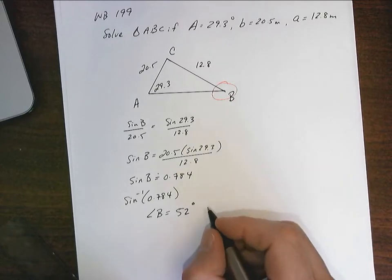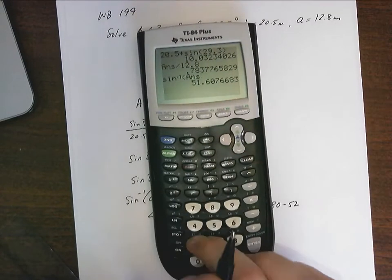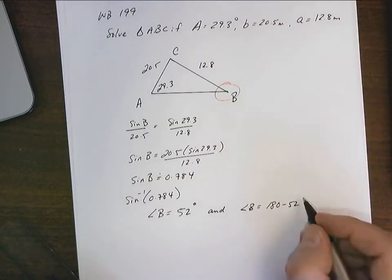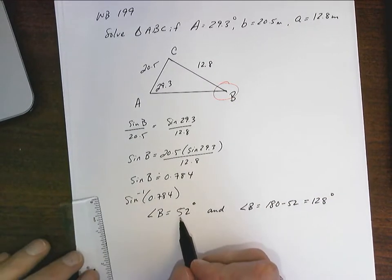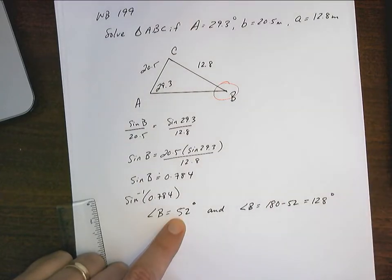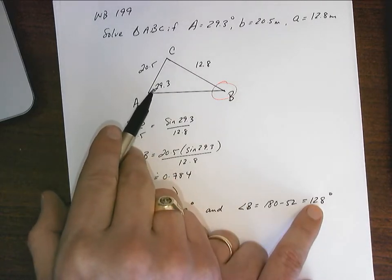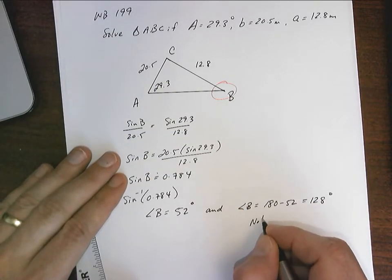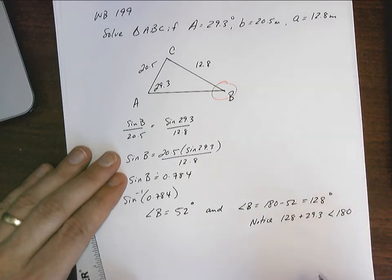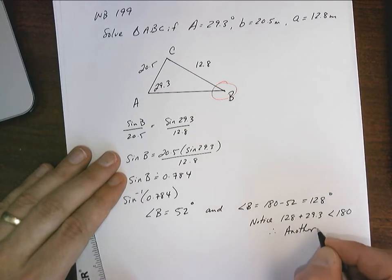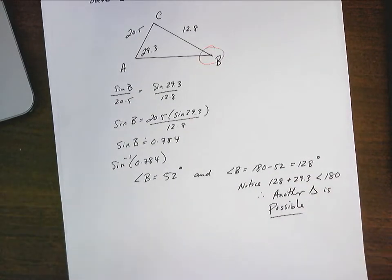So now the question is, angle B could equal 180 minus 52. So 180 minus 52 is going to be 128. So I wonder if we can make a triangle here. I know I can make a triangle here because 52 plus 29.3 is not greater than 180 degrees. This one, 128 plus 29.3, is also not greater than 180 degrees. So therefore, it's less than 180. Therefore, another triangle is possible.